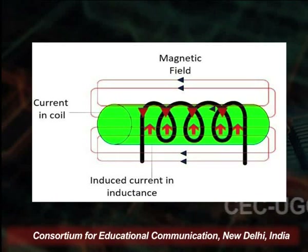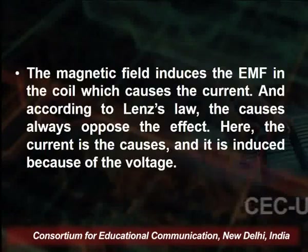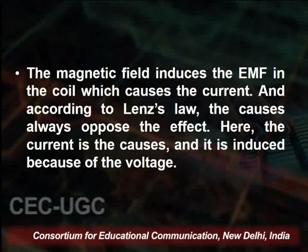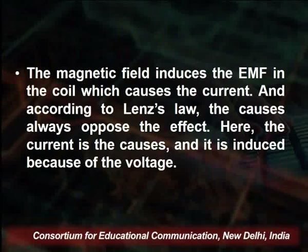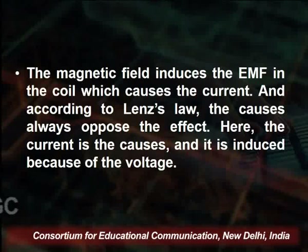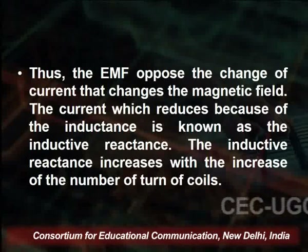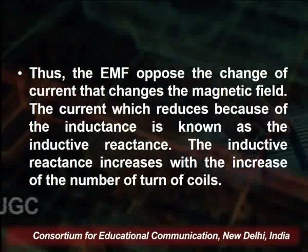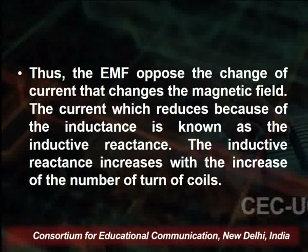When the current-carrying coil is present and current passes through it, an induced current is produced and a magnetic field is generated. The magnetic field induces an EMF in the coil which causes a current, and according to Lenz's law the cause always opposes the effect. Hence the induced current opposes the applied voltage, and the EMF opposes the change of the current, which changes the magnetic field.